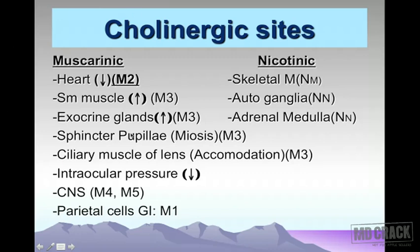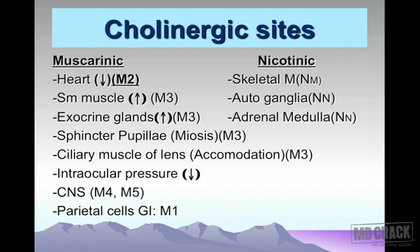Let's look at the cholinergic actions — acetylcholine is the prototype. When acetylcholine acts on the heart, it leads to decreased contractility, shown by a downward arrow. This is the M2 receptor subtype. For smooth muscle, cholinergic action increases smooth muscle contraction — that's the M3 site. Exocrine glands require acetylcholine for secretion, so secretions increase — also an M3 receptor site.